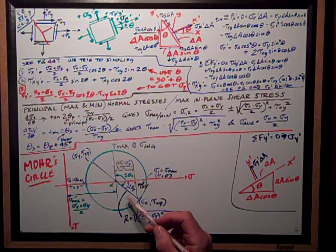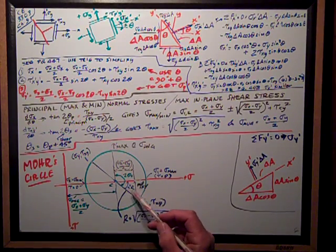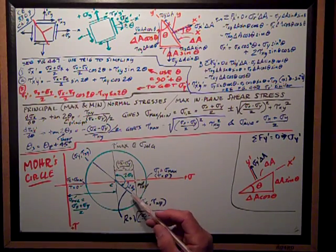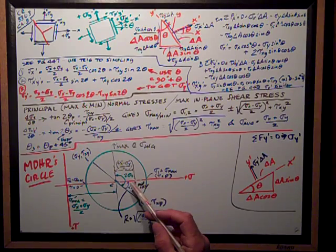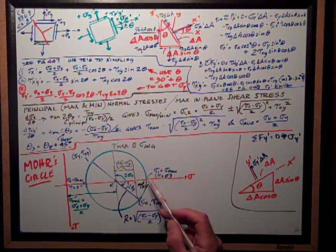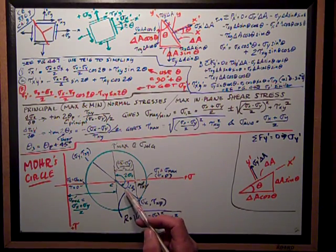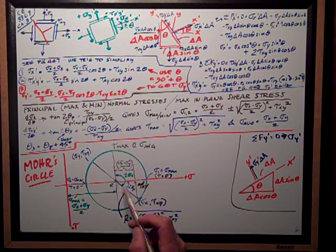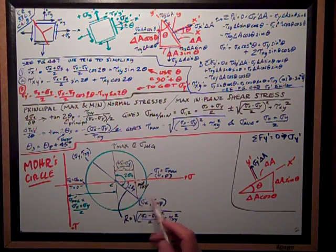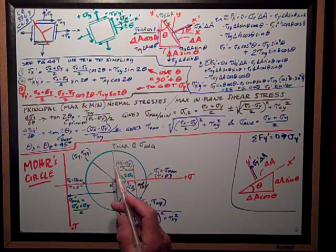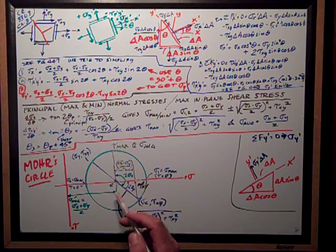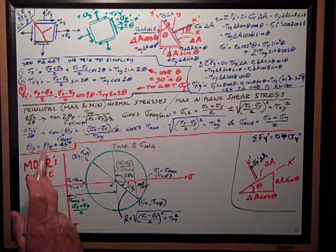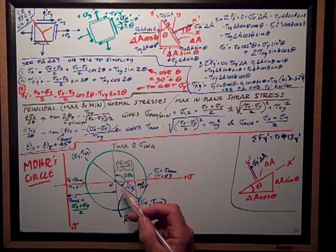All angles on Mohr's circle are doubled. Two times theta_p (the principal angle) taken counterclockwise from the x-axis takes us to the axis where maximum normal stress occurs. Adding two times 45 degrees — that is, 90 degrees — from the x-axis reaches the angle where tau_max occurs. So theta_s equals theta_p plus 45 degrees, confirming that the maximum shear plane is always 45 degrees from the principal stress plane.